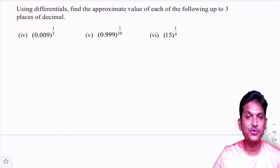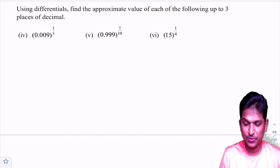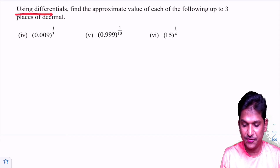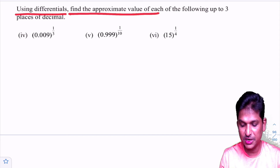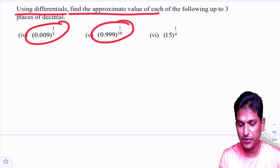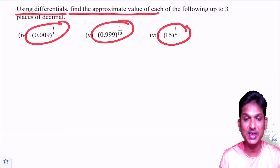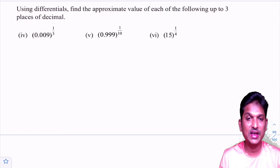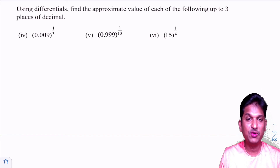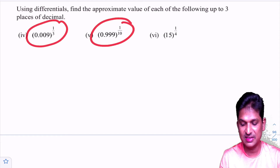In this class, what are the problems we are going to do? We observe using differentials to find the approximate value of the following. We need to find the approximate value of these things by using differentials, not by using a calculator. Delta y is known as differential of y, and delta x is known as differential of x. By using delta y and delta x formulas, we need to find the approximate values.